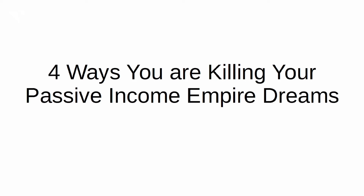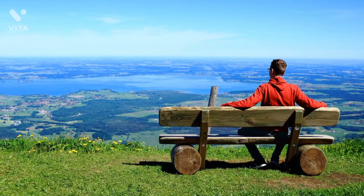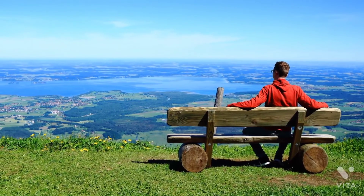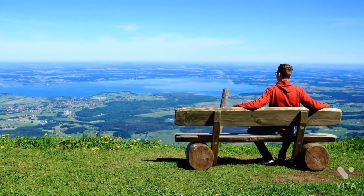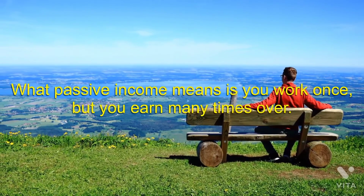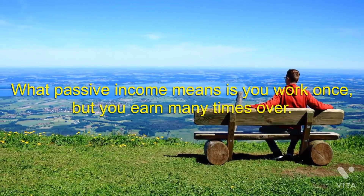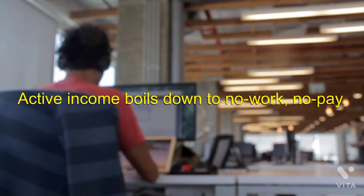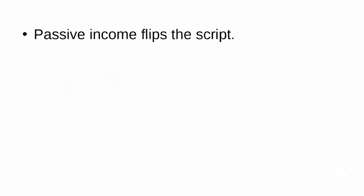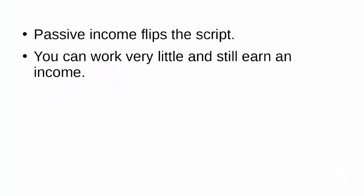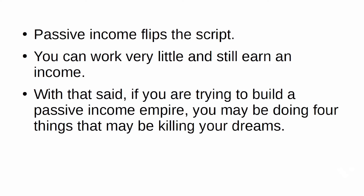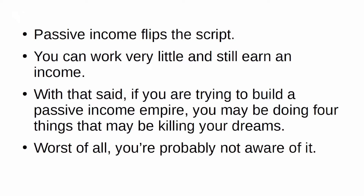Four ways you are killing your passive income empire dreams. One of the best ways to earn a living is to do it with as little work as possible. Passive income means you work once but earn many times over — compare this to active income where you have to show up to work or you don't get paid. With passive income, you can work very little and still earn an income. But if you're trying to build a passive income empire, you may be doing four things that are killing your dreams — and you're probably not even aware of it.